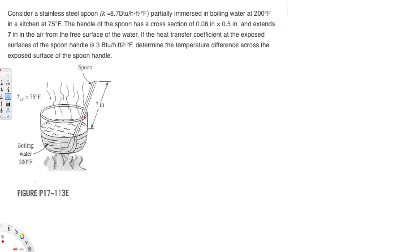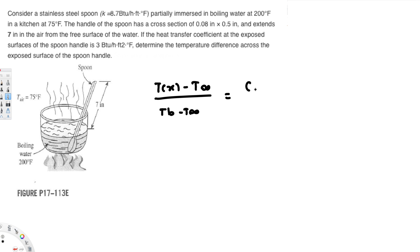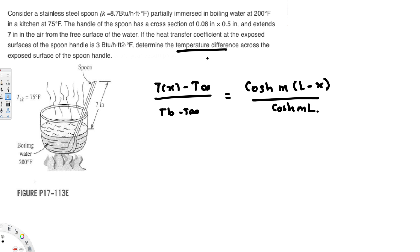The spoon handle can be treated as an adiabatic fin — that's the main thing we have to realize in this type of question. For an adiabatic fin, we use the equation: (T(x) − T∞) / (T_B − T∞) = cosh(M(L − x)) / cosh(ML). This is the governing equation for an adiabatic fin.